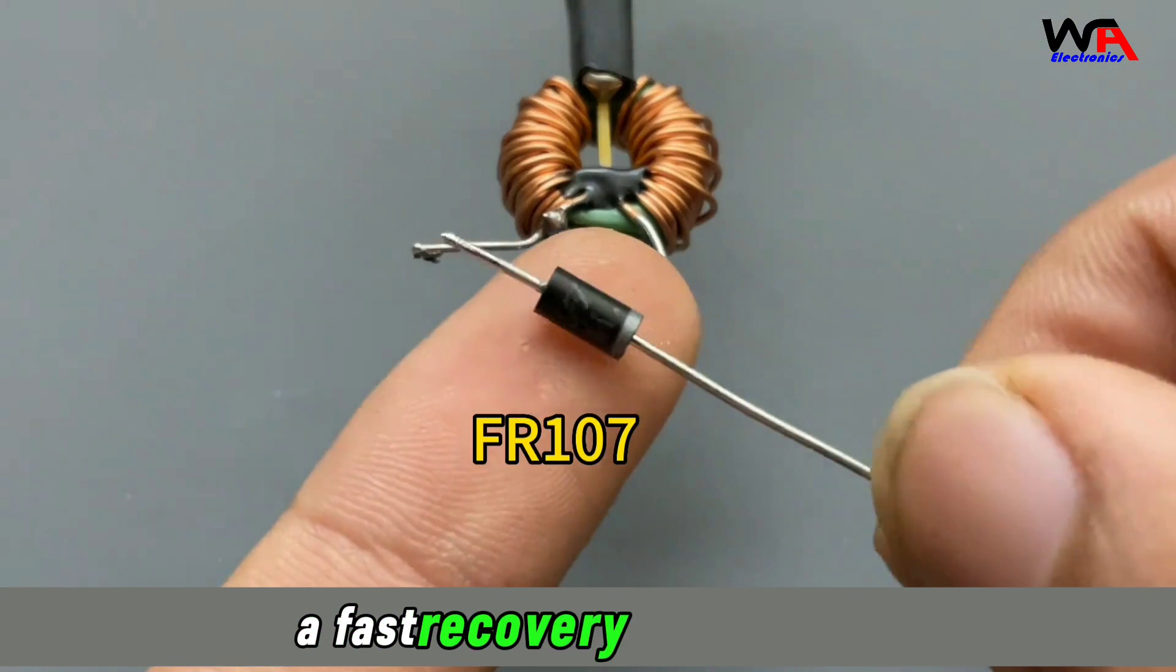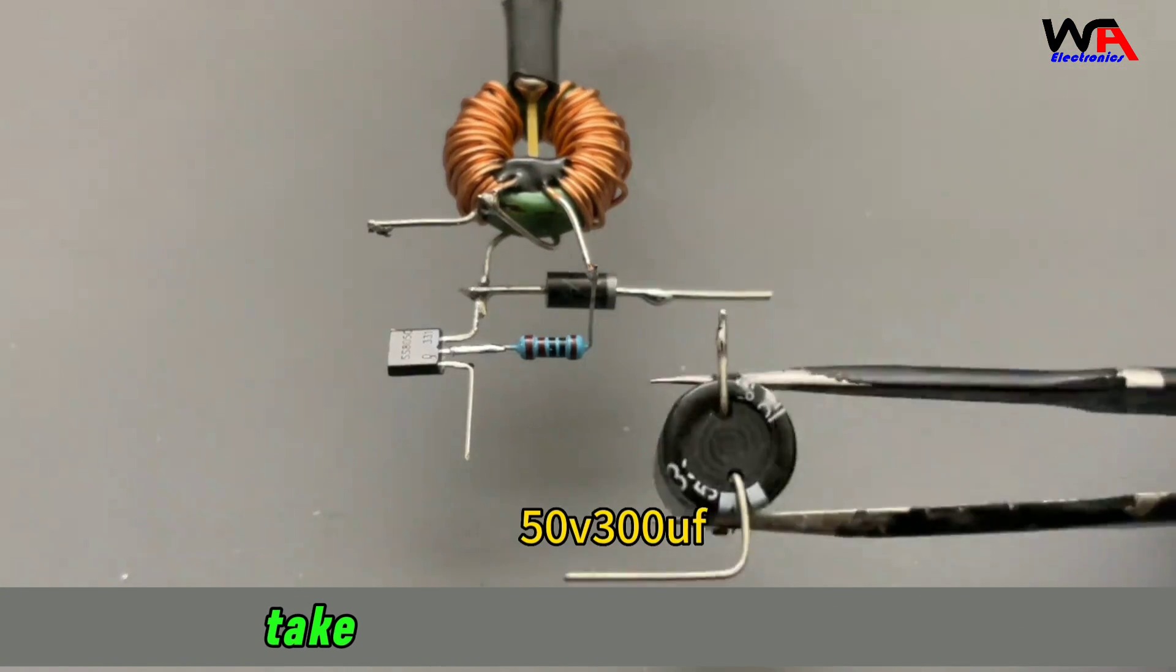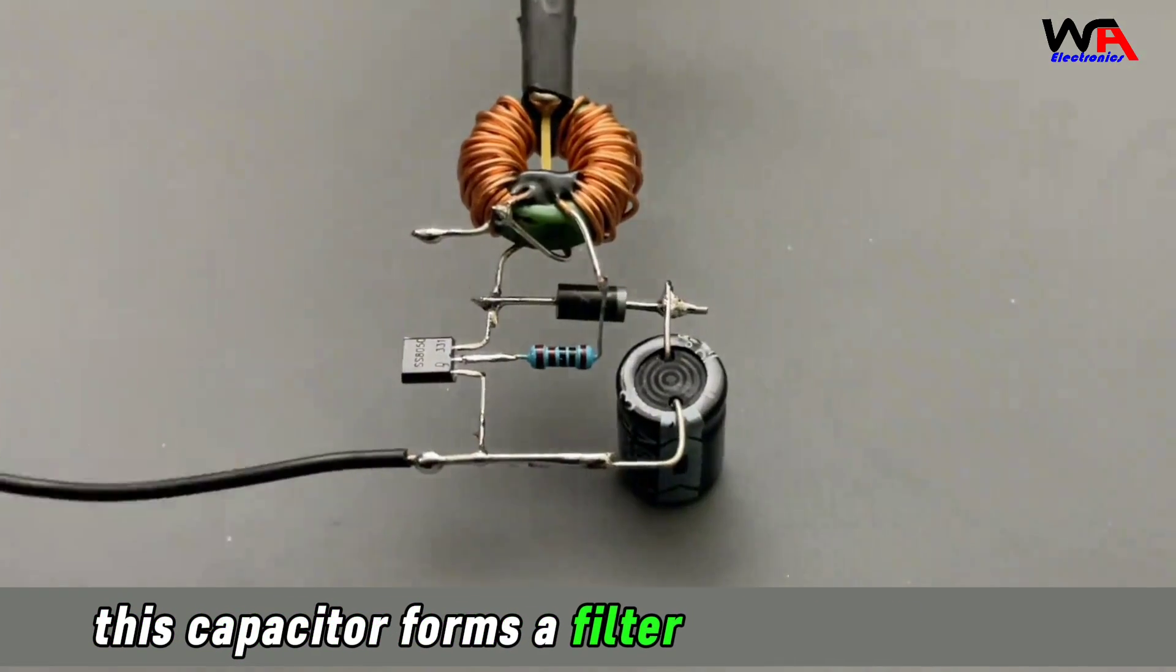Use a fast recovery diode FR107 and solder the anode with the collector of the transistor. Take a 100 microfarad capacitor. This capacitor forms a filter for energy storage.